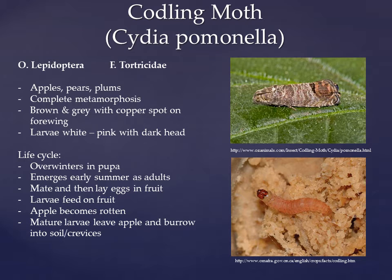The final species I will introduce today is Cydia pomonella, commonly known as the codling moth. The codling moth is an insect from the order Lepidoptera and family Tortricidae. This moth is primarily a pest of apple trees but has also been noted to attack plum and pear trees as well. These moths are a mixture of brown and gray colors and tend to be approximately 10 to 12 millimeters long. They have a copper colored spot located at the very end of the forewings. Like the previous insects, the codling moth also has complete metamorphosis. Depending on the age of the larva, the caterpillar body can range between a white color in younger larvae to a pinkish color in mature larvae. Mature larvae have dark brown or black heads.